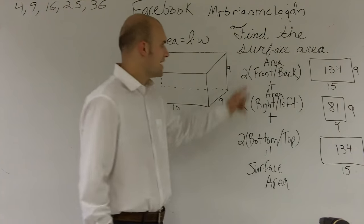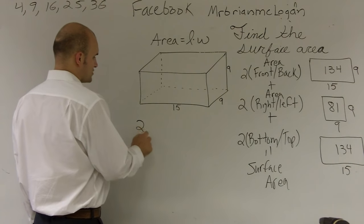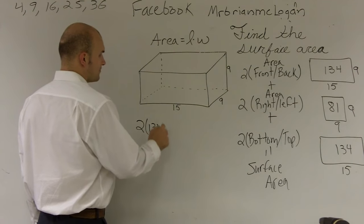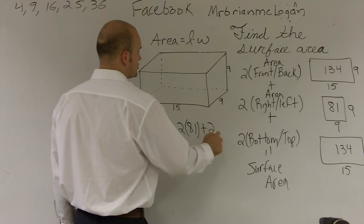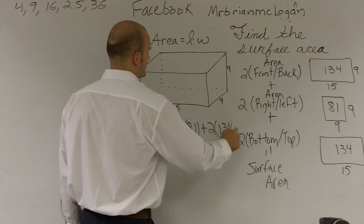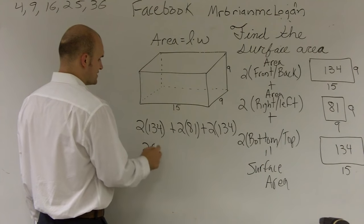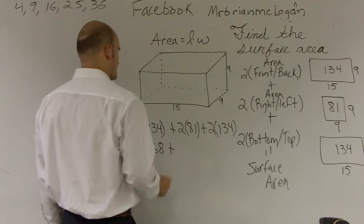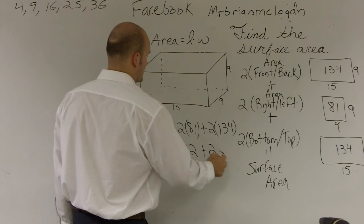But remember, we have to multiply each one by 2. So it's going to be 2 times 134 plus 2 times 81 plus 2 times 134. 2 times 134 is 268, plus this is going to be 162, plus 268.